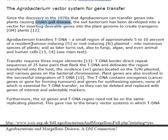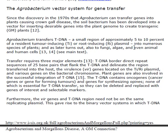Agrobacterium transfers tDNA, a small region of approximately 5-10% of a resident tumor-inducing Ti or root-inducing Ri plasmid, into numerous species of plants, and it later turns out also to fungi, algae, and even animal and human cells.